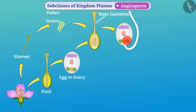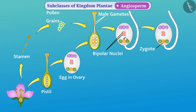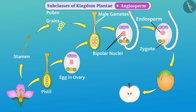One of these male gametes fuses with an egg cell to form a zygote, and the second male gamete fuses with bipolar nuclei to form an endosperm. The zygote then develops into the seed and the ovary develops into the fruit.